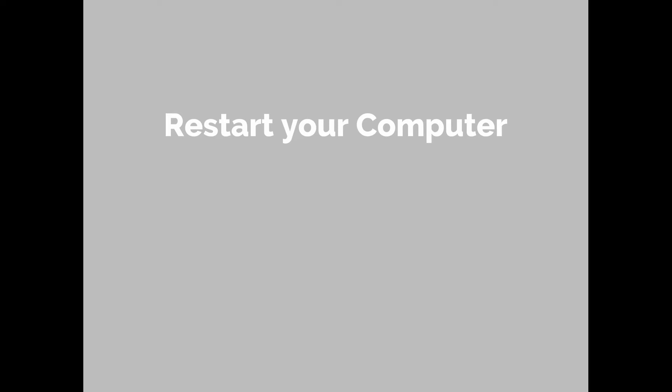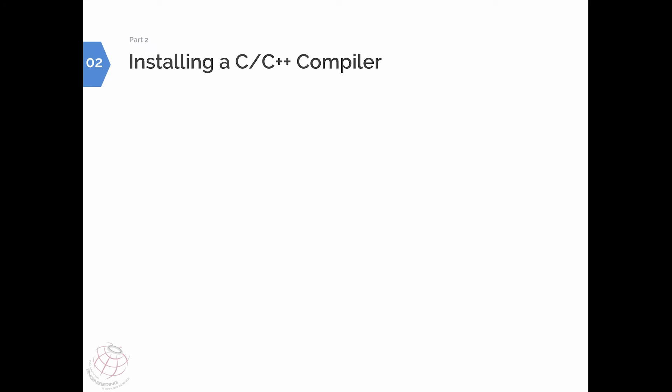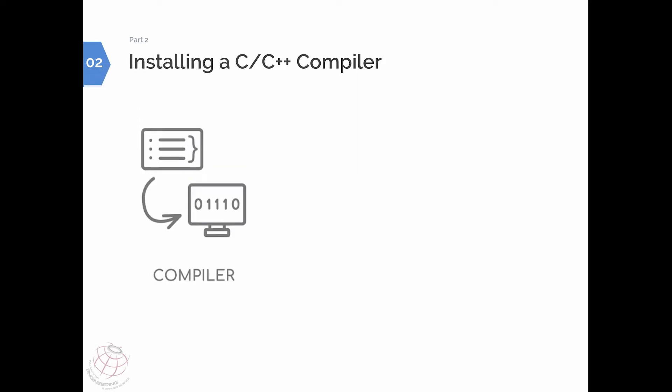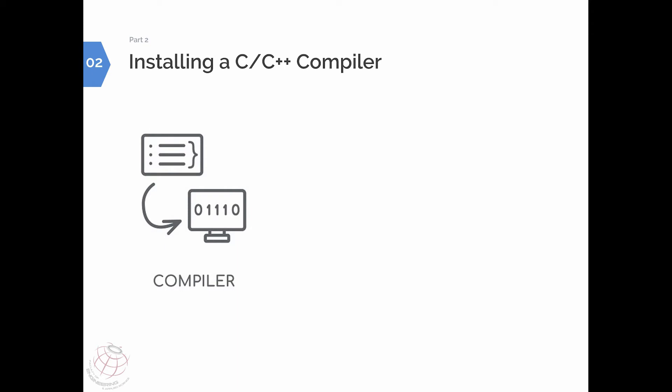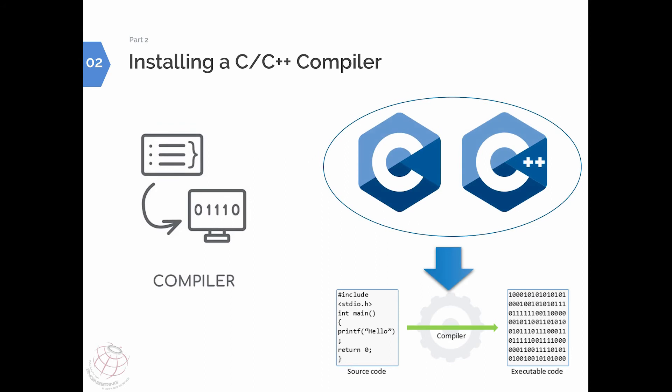After restarting, we move to the second step: installing a C or C++ compiler. A compiler is a tool that converts your script written in a higher-level programming language into a lower-level machine language. So the program you've written in MATLAB is converted using this compiler to machine-level code — that's what C or C++ compilers do.